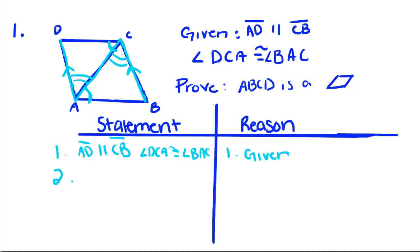And if you remember, the alternate interior angles of a pair of parallel lines are congruent. So, for our next step, we can say angle DAC is congruent to angle BCA, and then say, if alternate interior angles of parallel lines, then angles congruent.